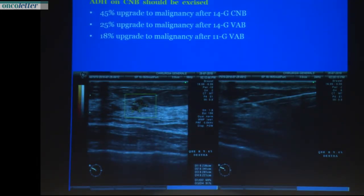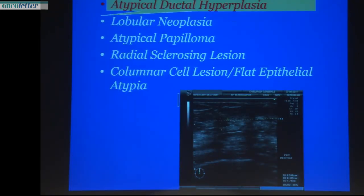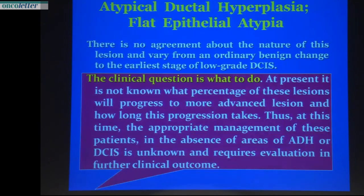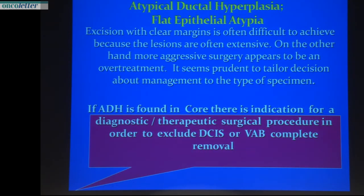Atypical ductal hyperplasia should be excised. In other cases there is no agreement about the nature of this lesion — it varies from an ordinary change to the early stage of low-grade DCIS. The clinical question is what to do: at present it is not known what proportion of these lesions will progress to more advanced lesions or how long that progression takes. Therefore, the appropriate management of atypical ductal hyperplasia is unknown and requires evaluation for clinical outcome. If atypical ductal hyperplasia is found on core biopsy, there is an indication for diagnostic-therapeutic surgical procedure or complete removal by VAB in order to exclude DCIS.